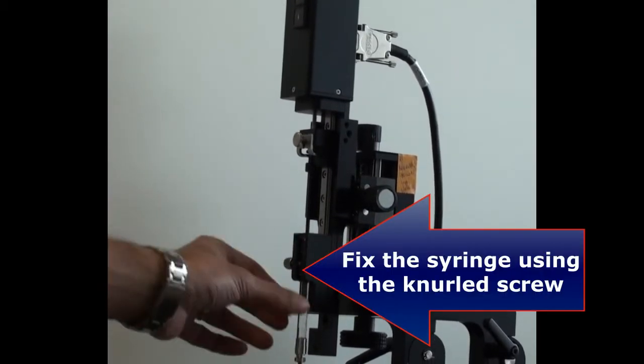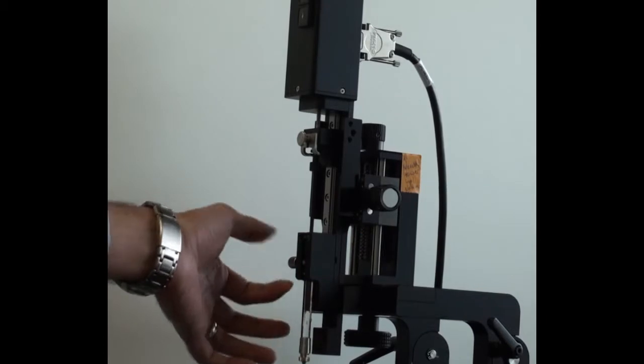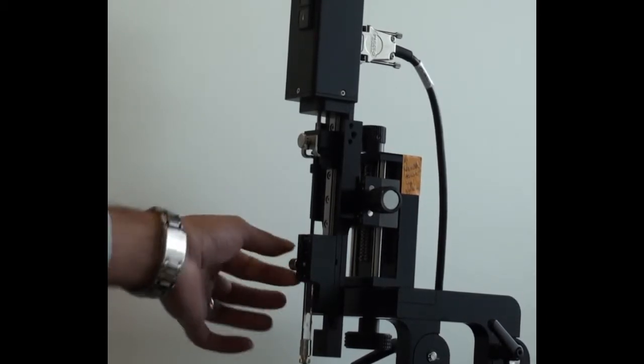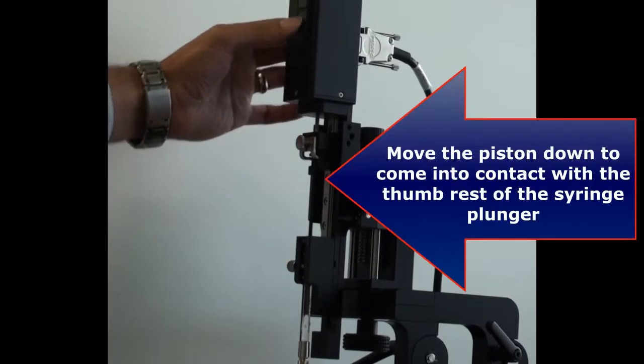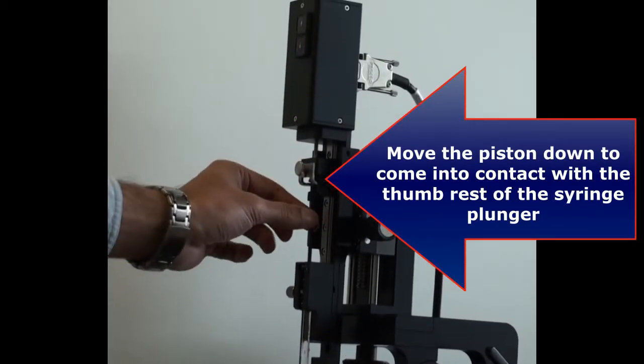Once the syringe is inside its designated place, secure the syringe using the securing nut and lower the plunger holder down to come into contact with the plunger.